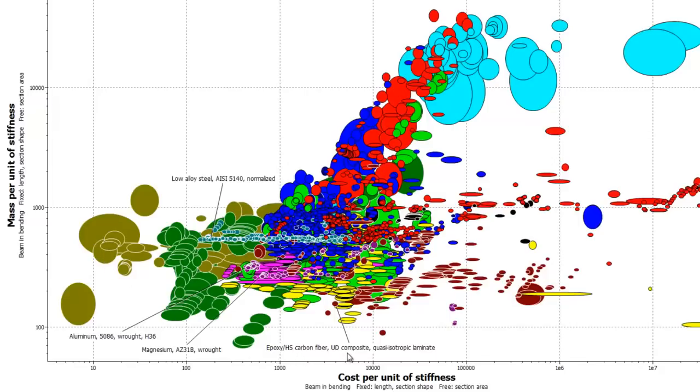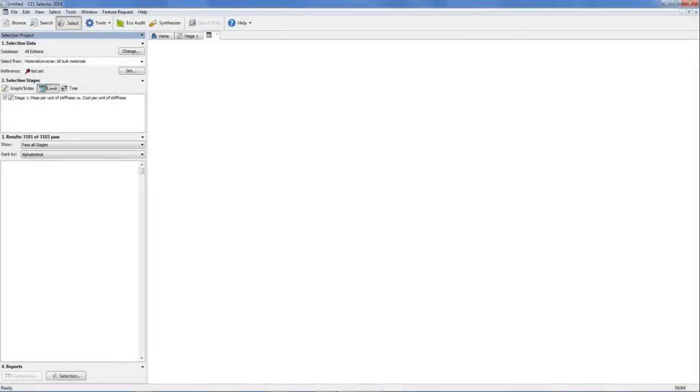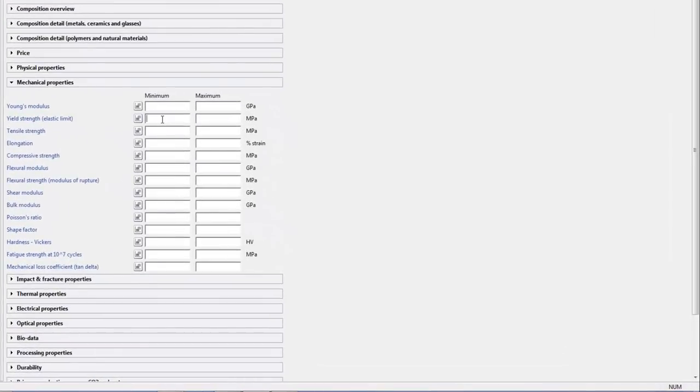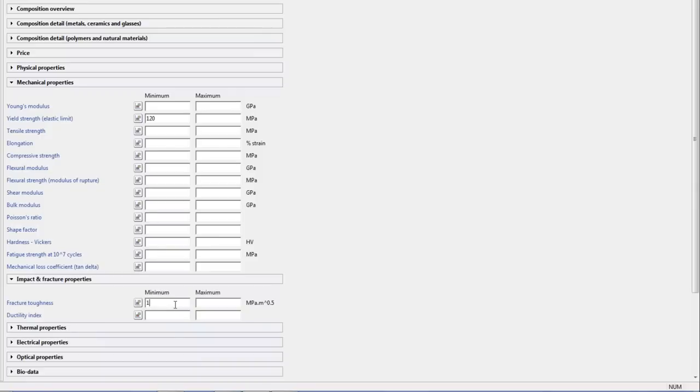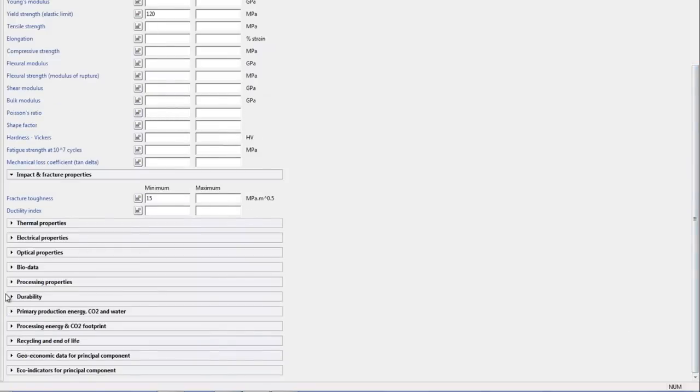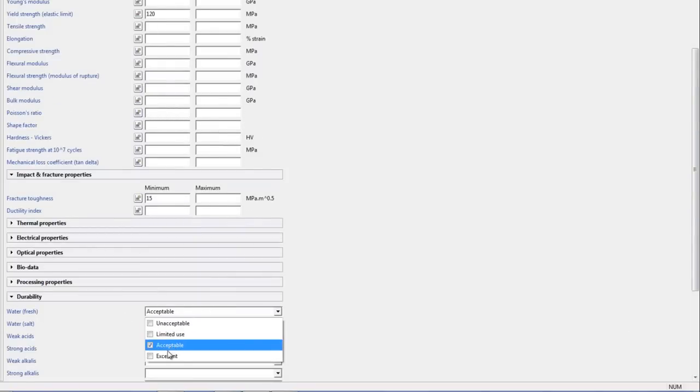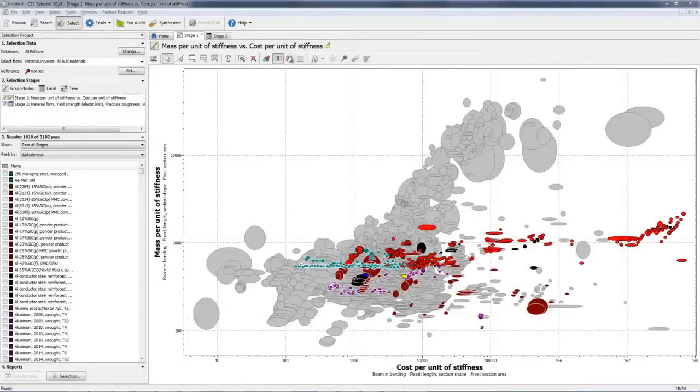However, we also need to consider some other essential design requirements and adding constraints on strength, toughness, and durability. This eliminates all materials that don't meet these requirements.